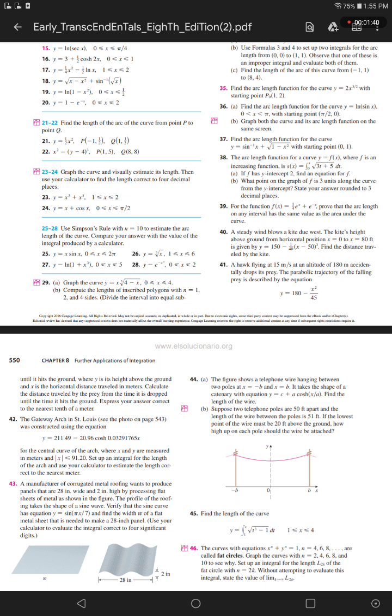Part B: What point on the graph of f is 3 units along the curve from the y-intercept? State your answer rounded to 3 decimal places.